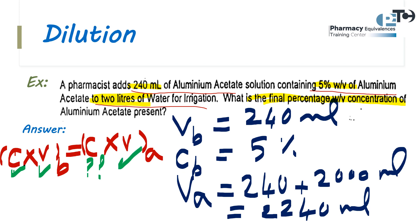So we can calculate this formula and obtain the Ca, which will be 0.53% weight per volume.